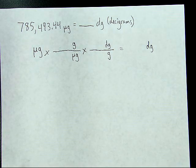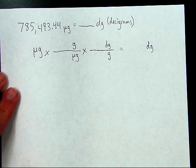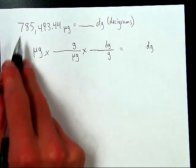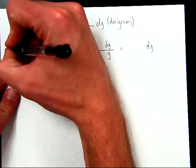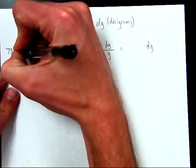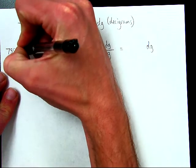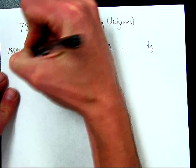Now I'm going to start putting numbers in there. So I'll start with the original number here. I've started with 785,493.44 micrograms.